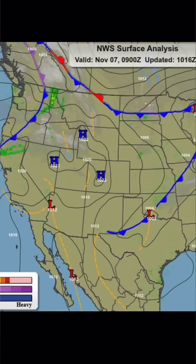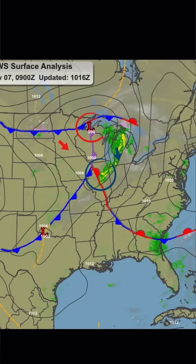Third, wind direction. Surface winds usually follow between 10 to 45 degrees of the isobars. Around highs, winds flow outward and clockwise. Around lows, inward and counterclockwise. Using this rule of thumb, you can often predict wind direction before checking a METAR.